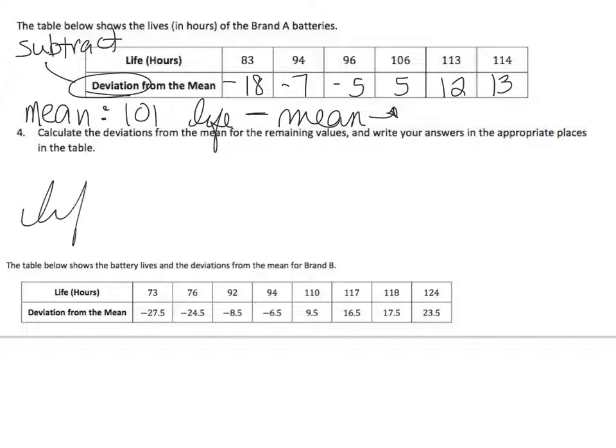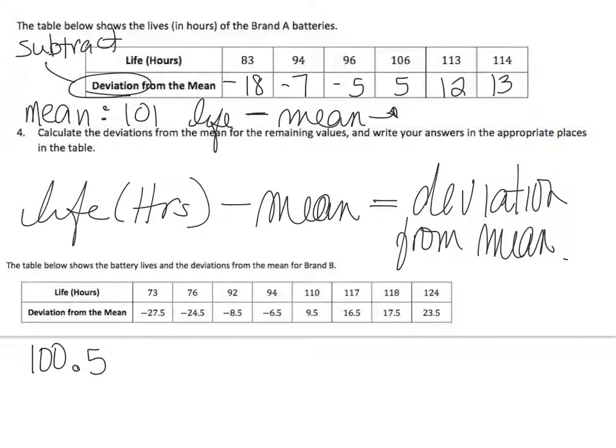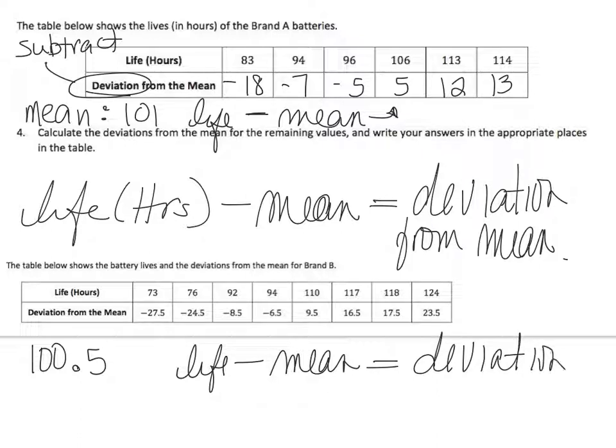I could have written that down here. Life in hours minus mean equals deviation. Deviation from mean means how far it drifted from the mean, how far it is away from the average. The table below shows the battery lives and the deviations from the mean for brand B. If you remember, brand B was 100.5. So, what they did was life minus mean equals the deviation from the mean. We're going to use those values to calculate some more things.